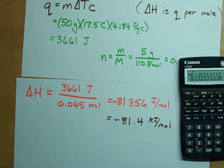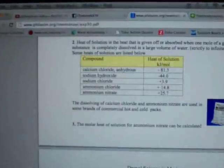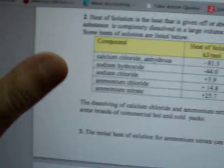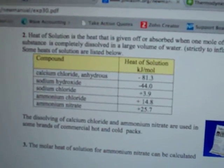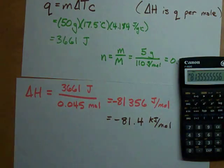And kilojoules per mole is still a pretty common unit. And what I want to point out to you is that, here's the website I stole that number off of. Calcium chloride anhydrous, negative 81.3 kilojoules per mole. Yay! We were pretty close.